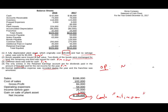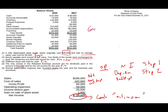Step two: add non-cash expenses. Non-cash expenses include depreciation, amortization, and bad debt expense. These are expenses where you debit an expense account and credit something non-cash — for example, debit depreciation expense and credit accumulated depreciation; or debit amortization expense and credit the asset. Step three: deduct any gains and add any losses. Step four: analyze current assets and current liabilities.